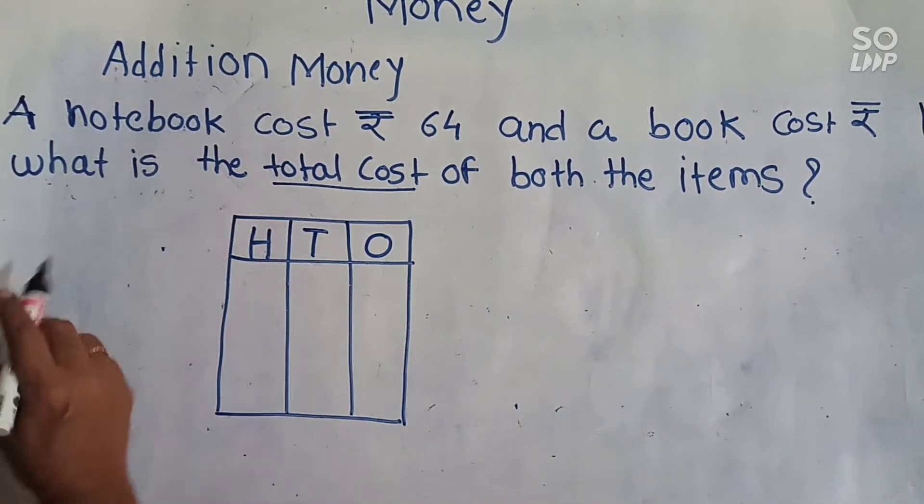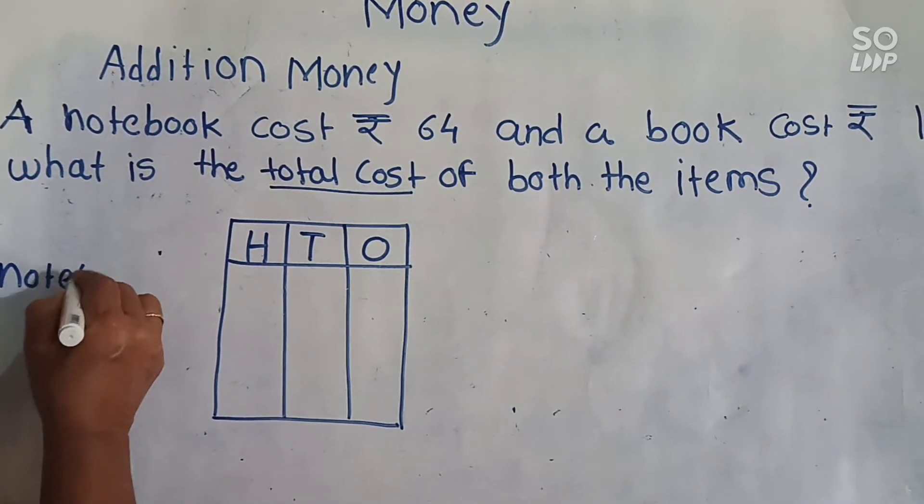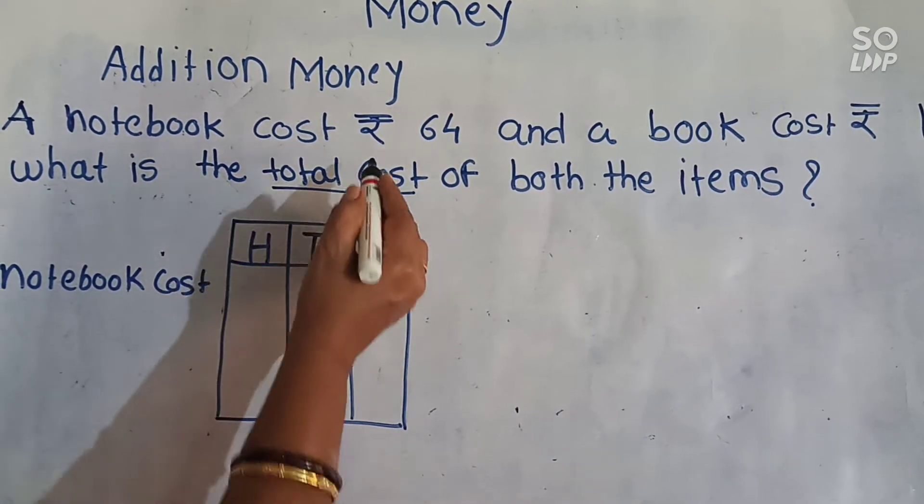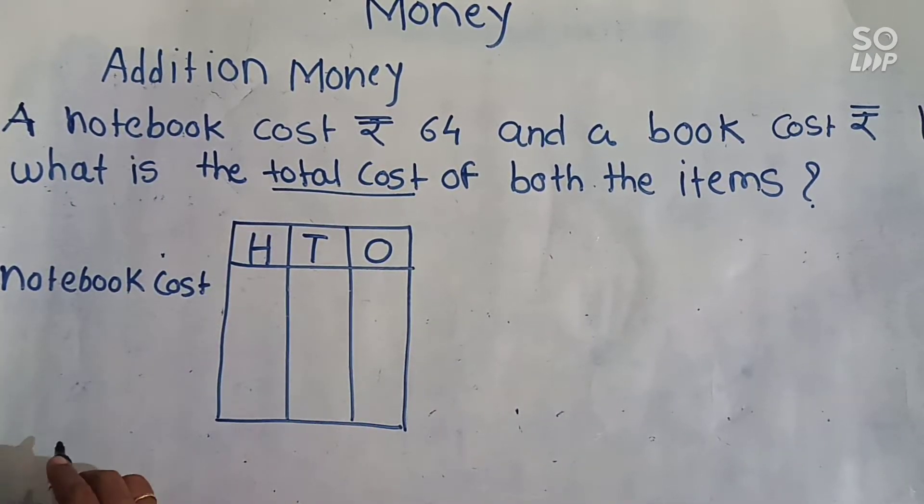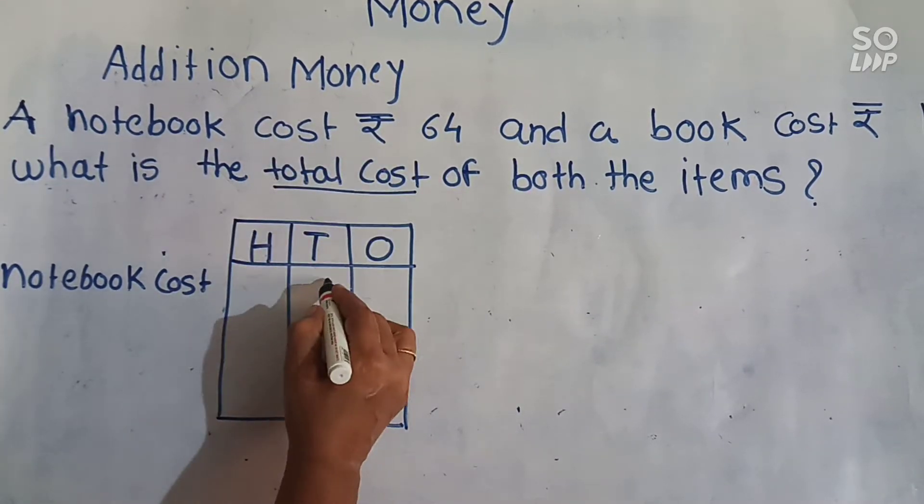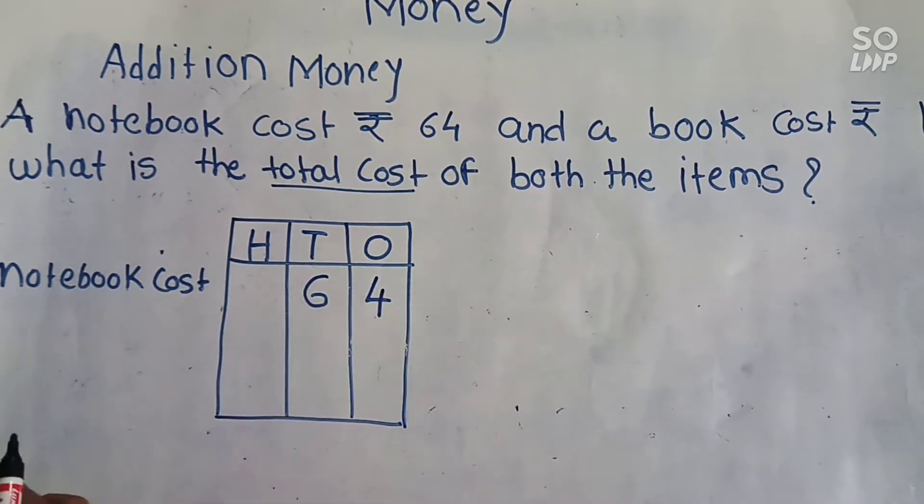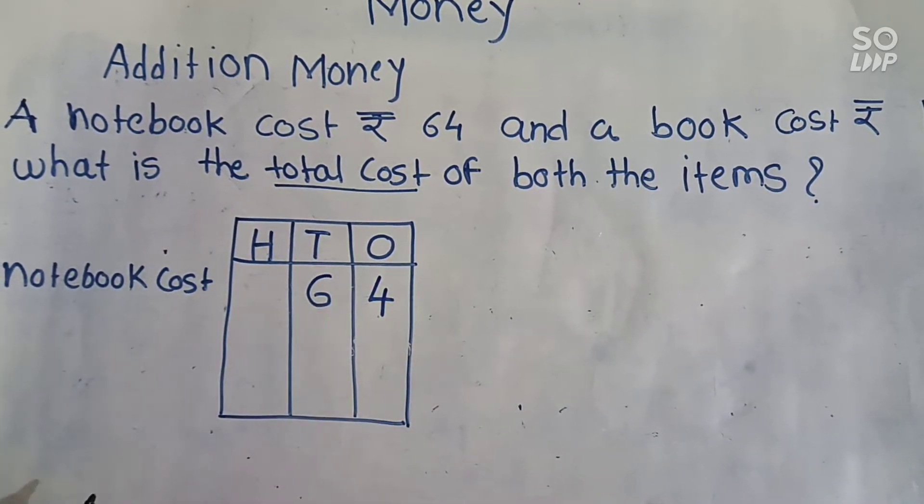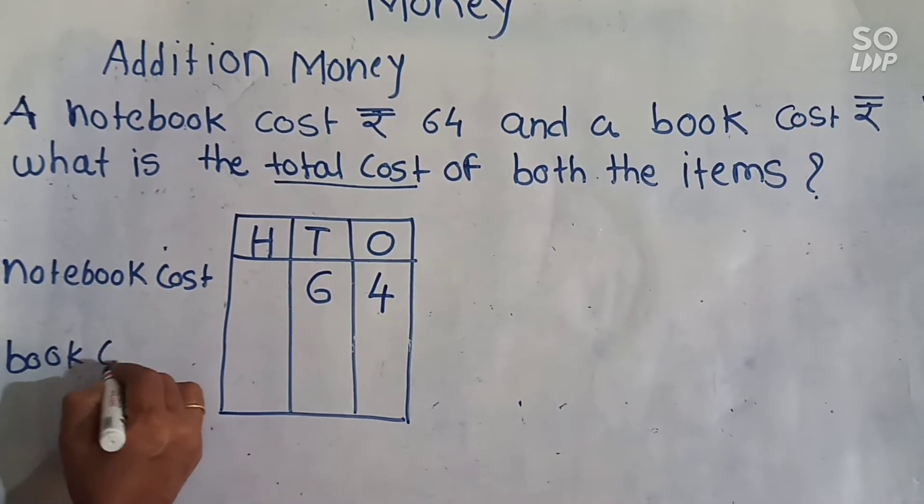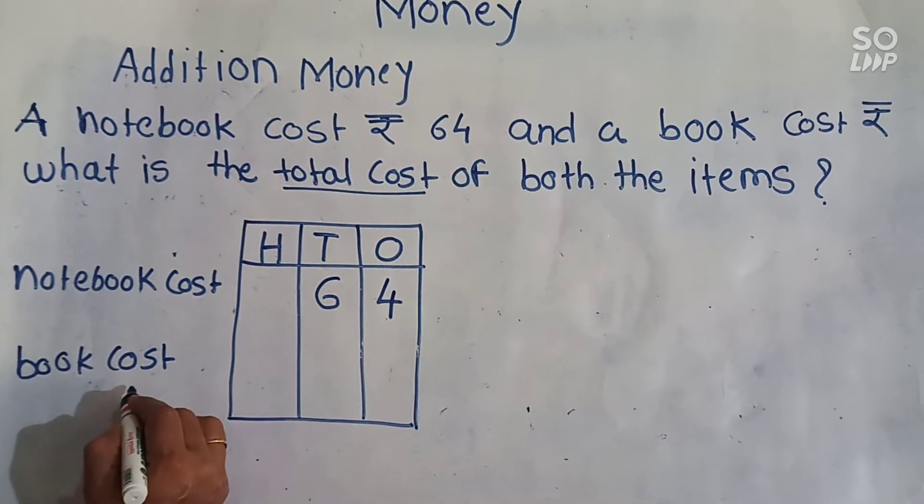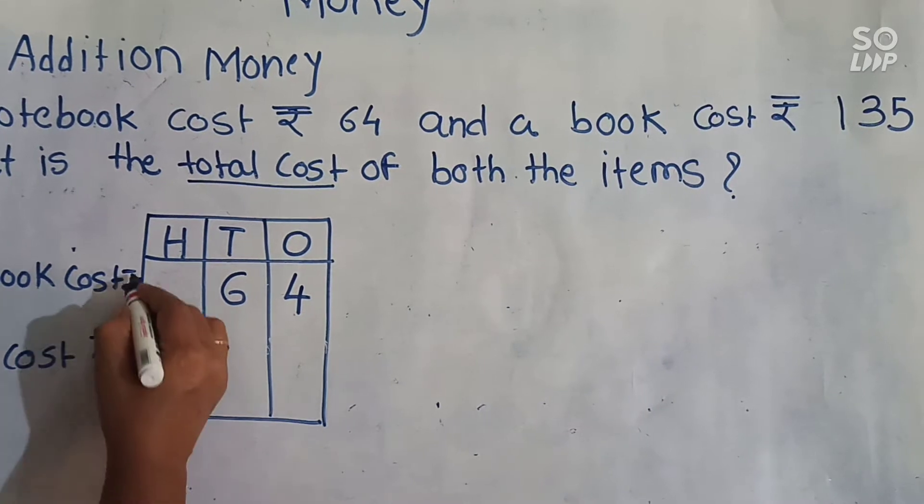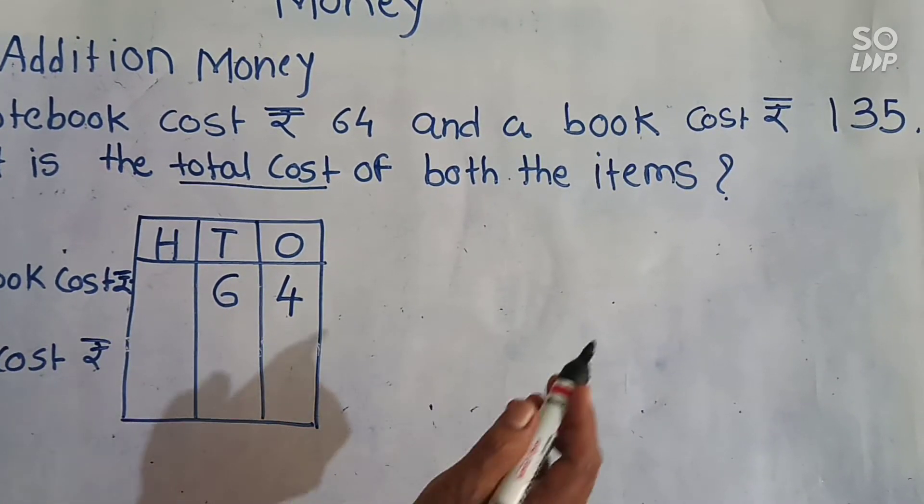Now notebook cost. Notebook cost rupees 64. We have to write here in rupees 64. So we will write this in tens and ones place. Now book cost. Book cost rupees 135.